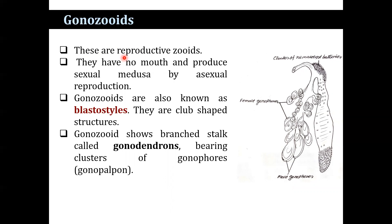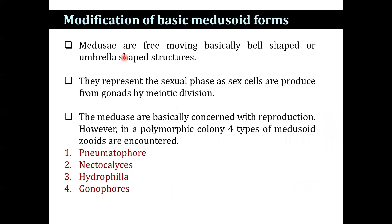Now, what are the modifications of the basic medusoid form? Medusa are free-swimming, bell or umbrella-like structures representing the sexual phase; they are produced from polyps by budding. Thus medusa are basically concerned with reproduction. However, in a polymorphic colony, the medusoids encountered are: pneumatophore, nectocalyx, hydrophyllia, and gonophores.